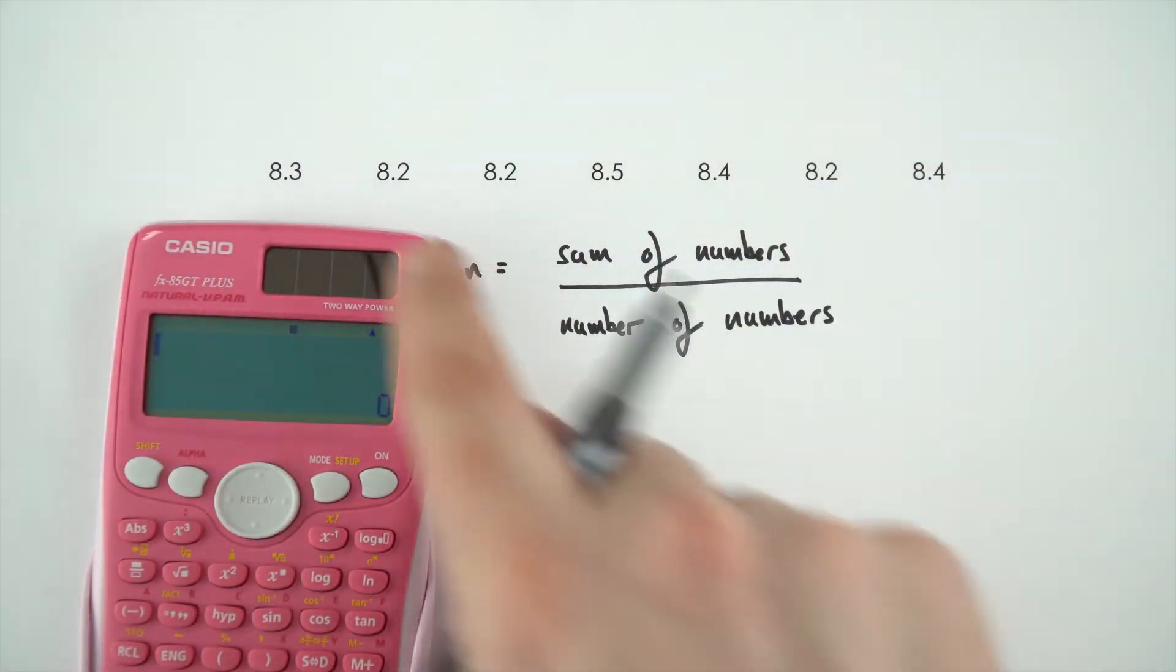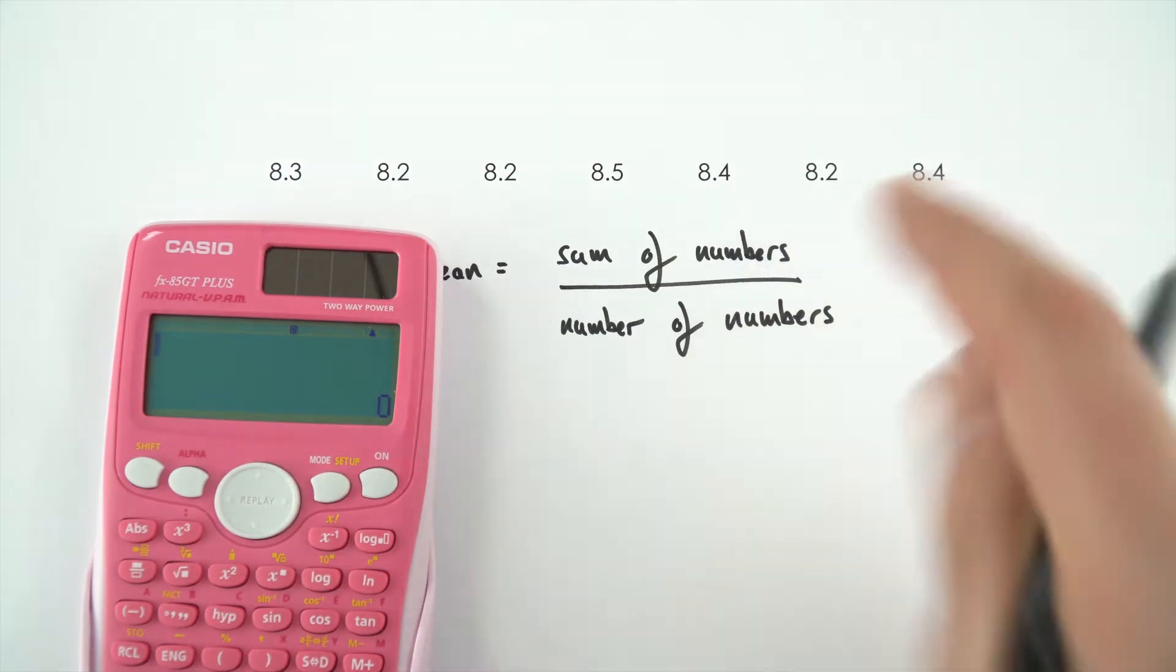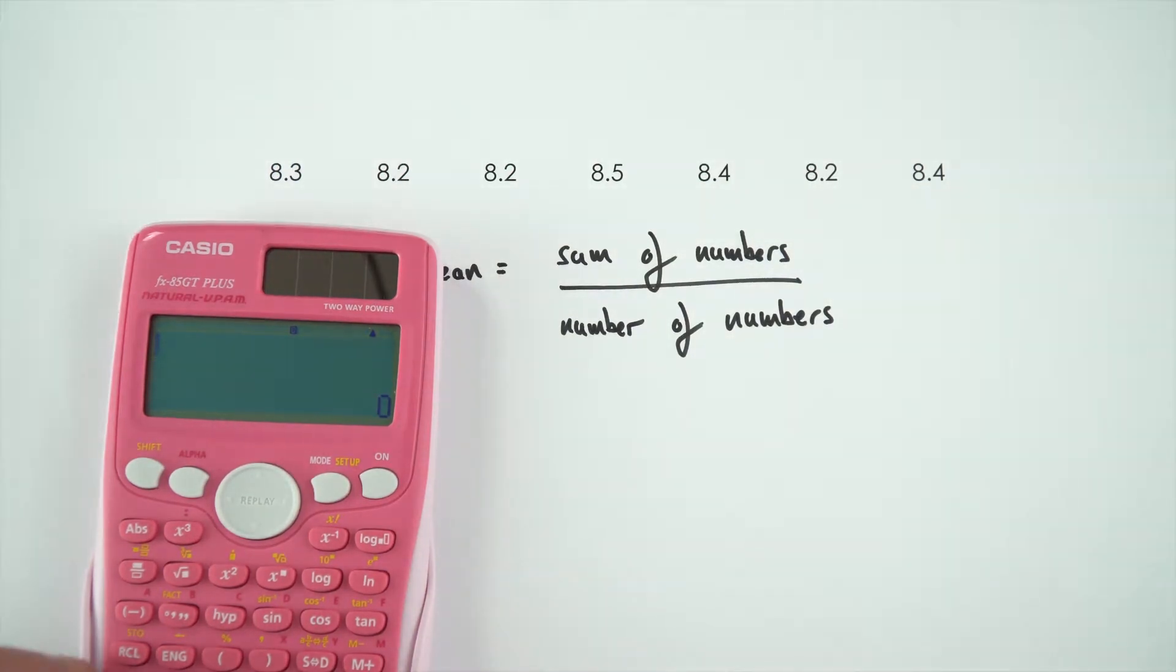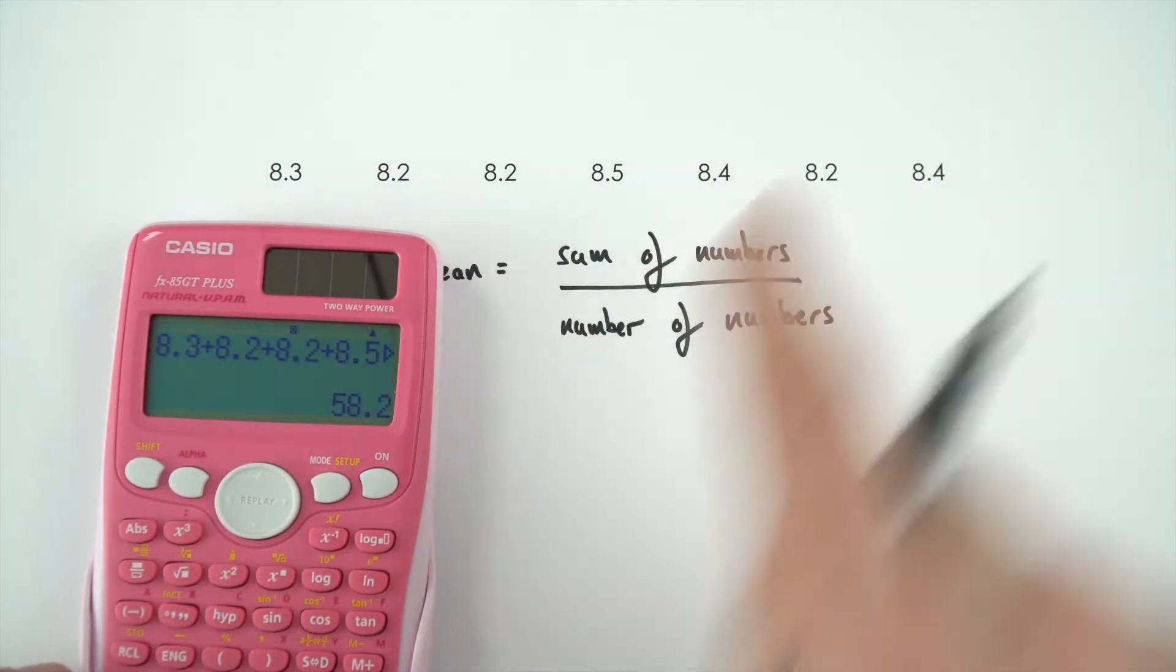So, in this example here, all we need to do is just add up all of these numbers. Again, your calculator comes in really useful for this. And then we divide that by how many numbers we have. In this case, we've got seven of them.